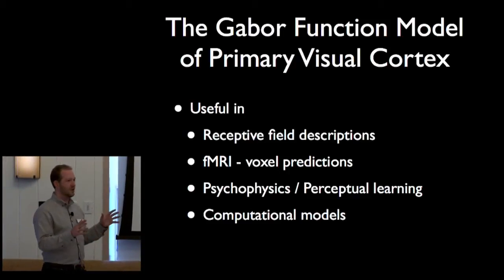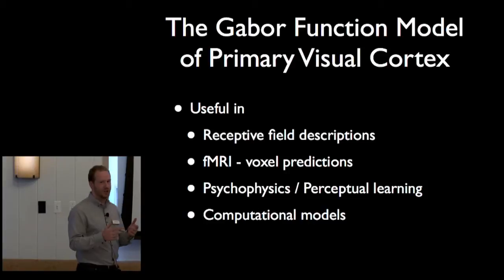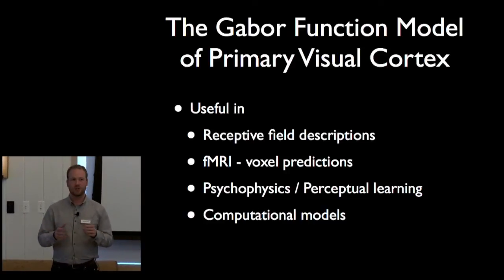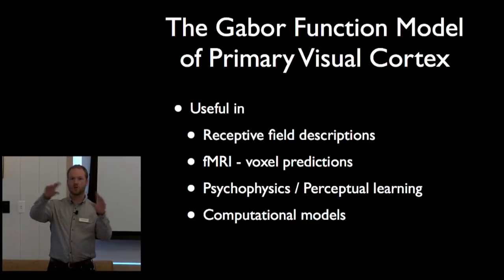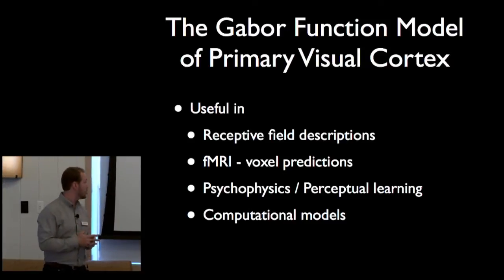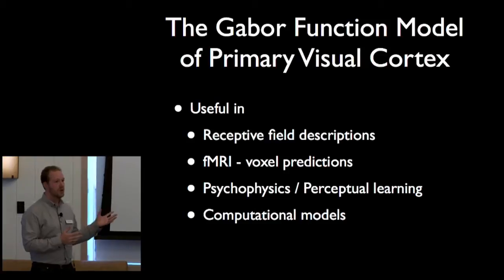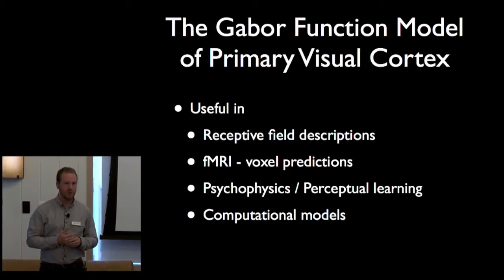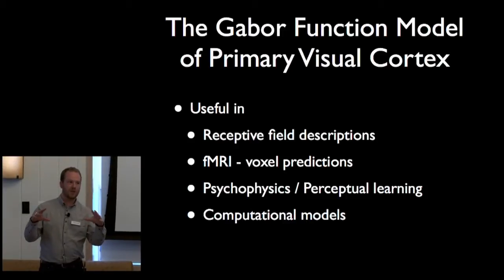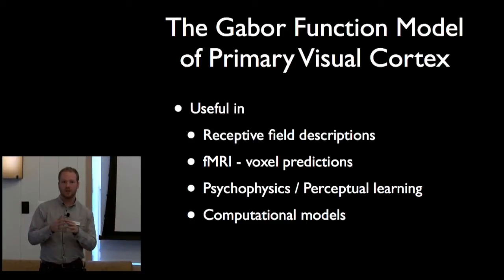Also in fMRI encoding and decoding models, voxels often have as their substrate Gabor-like pyramids that allow us to predict quite well decoding and encoding models of different voxels. In psychophysics, the Gabor function seems to be touching every single paradigm — whether it's detection, thresholds, or contour integration. Also in computational models: some models have literally baked into the bottom layer, that V1 layer, a parameterized Gabor function that is just given as what the first layers are doing.